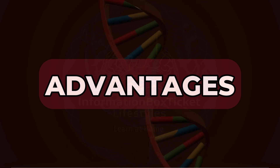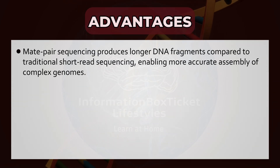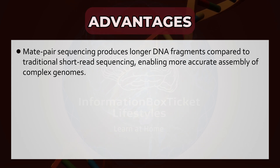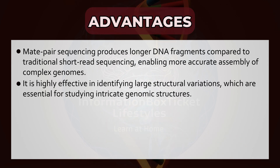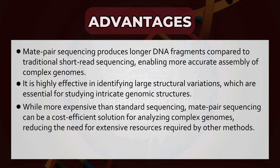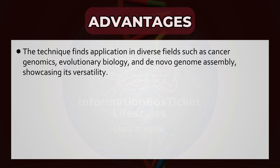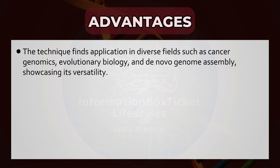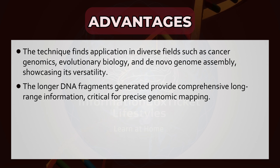Advantages of Mate Pair Sequencing. Mate pair sequencing produces longer DNA fragments compared to traditional short-read sequencing, enabling more accurate assembly of complex genomes. It is highly effective in identifying large structural variations, which are essential for studying intricate genomic structures. While more expensive than standard sequencing, it can be a cost-efficient solution for analyzing complex genomes, reducing the need for extensive resources. The technique finds application in diverse fields such as cancer genomics, evolutionary biology, and de novo genome assembly, showcasing its versatility. The longer DNA fragments generated provide comprehensive long-range information, critical for precise genomic mapping.